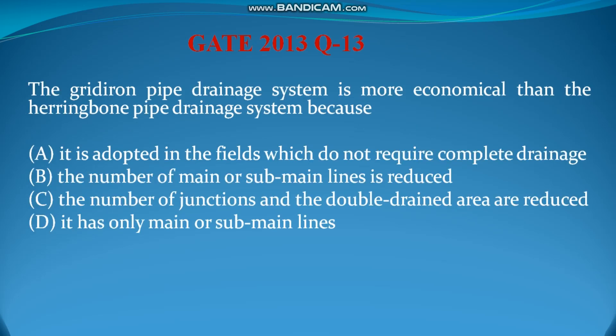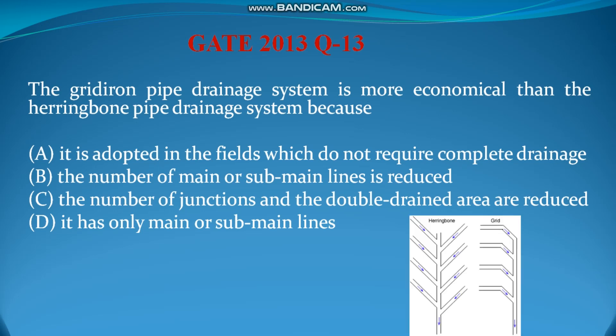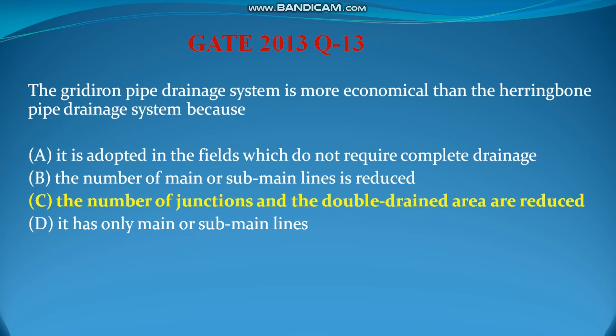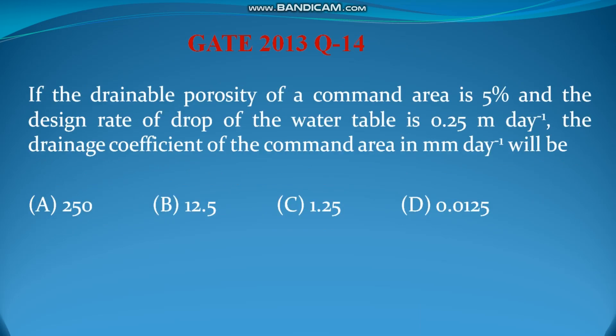Next question, question number 13: the gridiron pipe drainage system is more economical than the herringbone pipe drainage system. The herringbone system has branches on two sides, but the gridiron has only one side and is simpler. Therefore fewer junctions exist in the gridiron system. The answer is option C: the number of junctions and the double drain area are reduced, making it more economical.